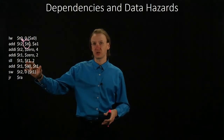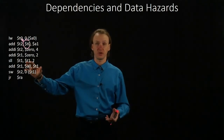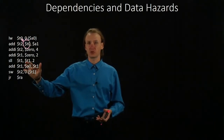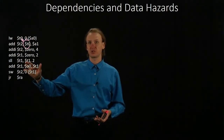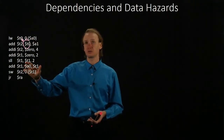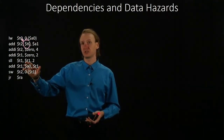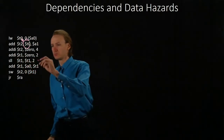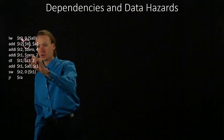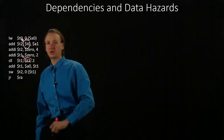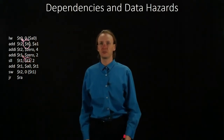In our fifth instruction, the shift-left logical, we have one source register which is T1, and that is dependent on the previous instance of T1, which was set up in the add immediate instruction. So we've got a dependency there.